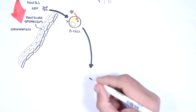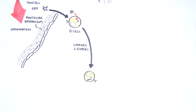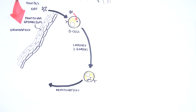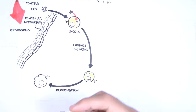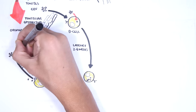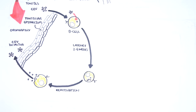Once the Epstein-Barr virus infects the B cells, it has an incubation period of about two to six weeks. During the incubation period, the Epstein-Barr virus replicates in B cells, and the virus is shed intermittently into pharyngeal secretions, particularly saliva — so saliva is how Epstein-Barr virus is transmitted between people. This cycle can continue and the person can be completely asymptomatic.